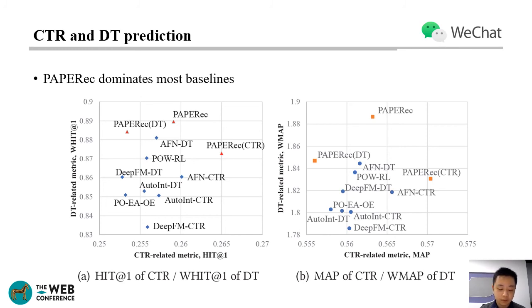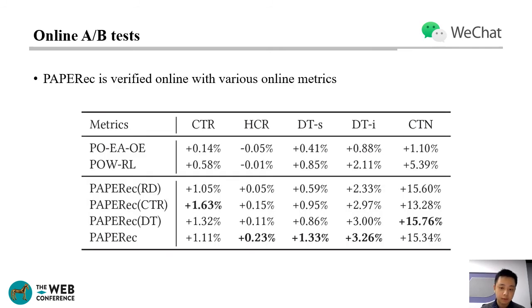This verifies the effectiveness of our model in optimizing multiple objectives. In PAPER, both single-objective models can be trained more efficiently and wisely to handle users' objective-level personalization. To verify our model in real-world scenarios, we conduct an online A/B test in WeChat top stories. We find that all PAPER models have consistent improvements on all online metrics, including CTR, dual-time, and diversity.